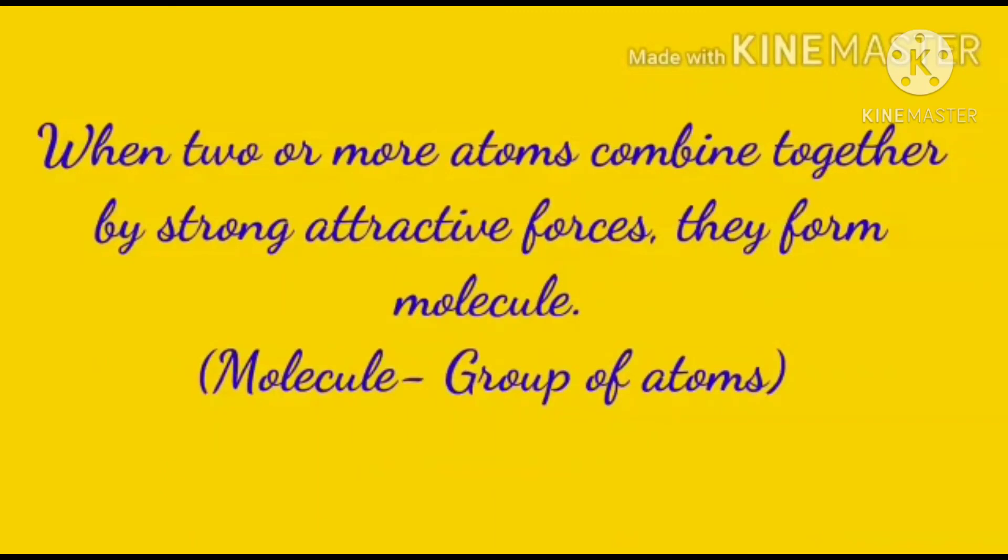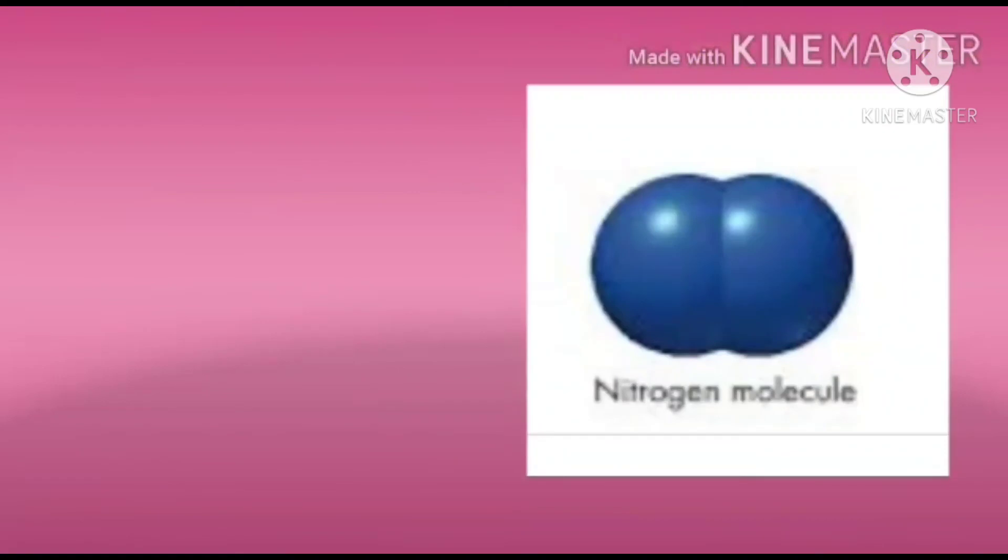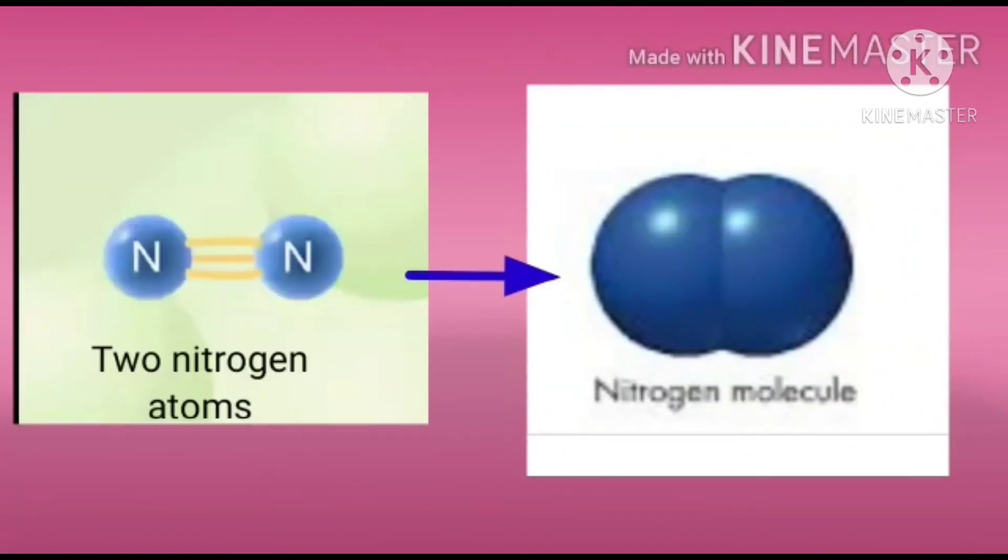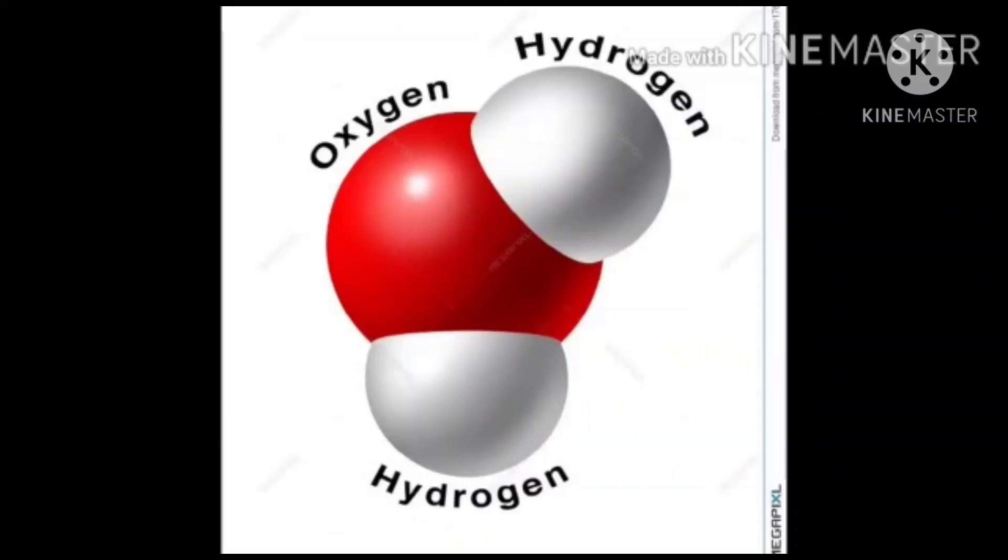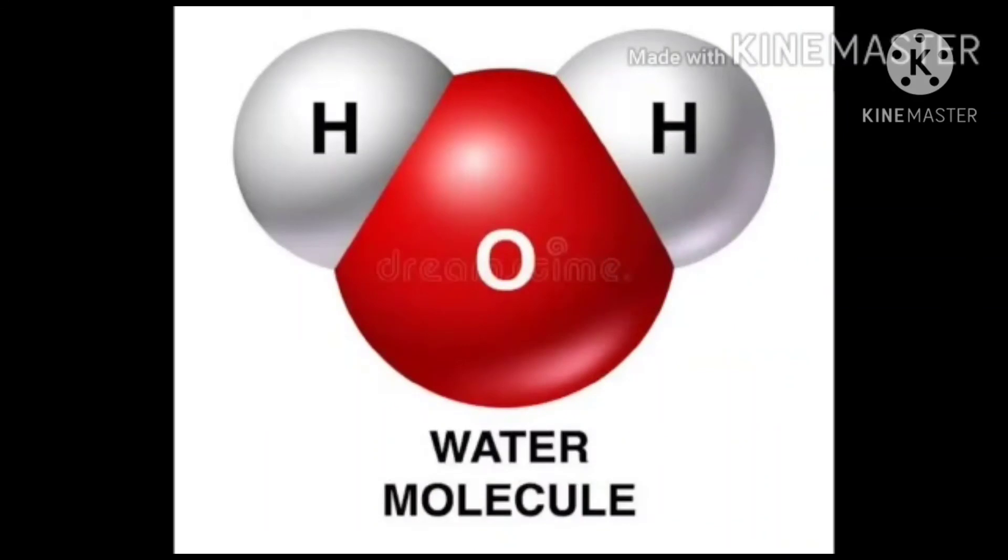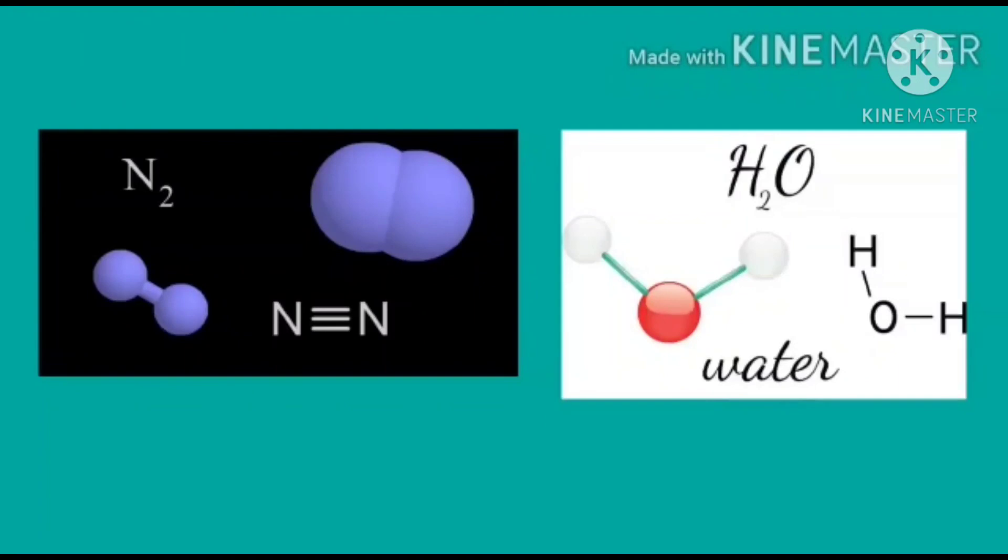Let us understand it with the help of some examples. Example number 1: When two nitrogen atoms combine together, they make nitrogen molecule. Second example: When two hydrogen atoms combine with one oxygen atom, they make water molecule. So, my dear students, from these two examples, we understood that molecules can be made up of same or different types of atoms.